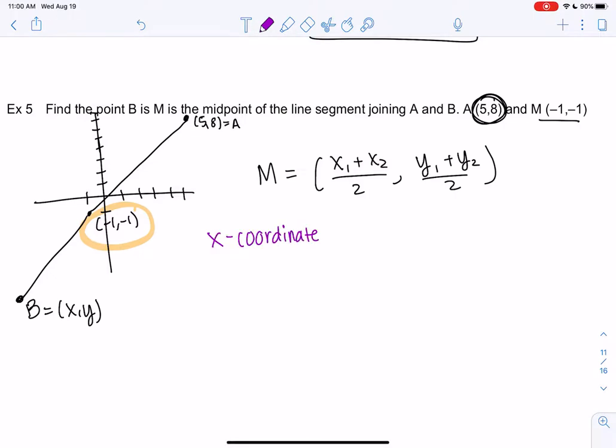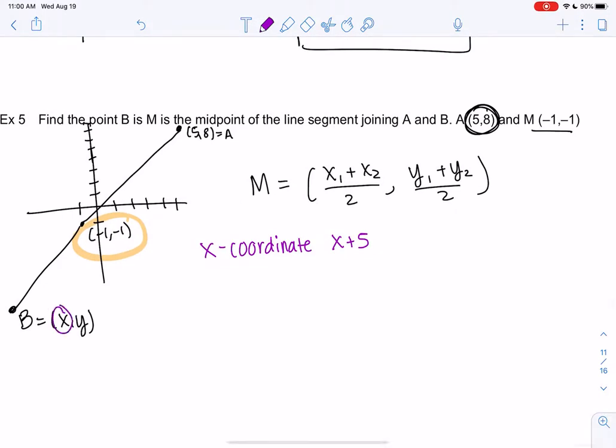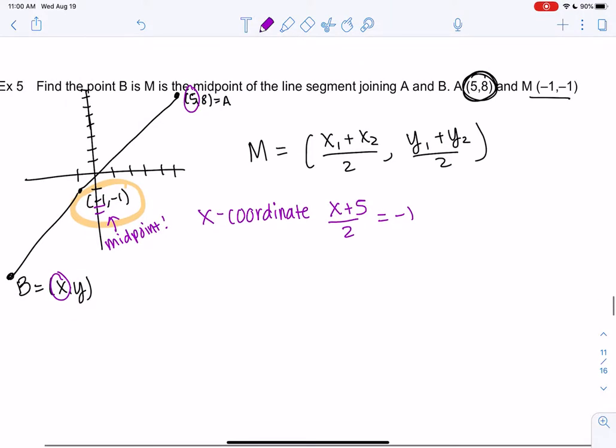So we know the midpoint is x1 plus x2, so we'll say x plus 5, x1 and x2, all over 2. We're going to average those out, and rather than saying that equals the midpoint, we know that equals negative 1. And so we'll go ahead and solve that. Send me a question if you're not quite sure how I'm plugging in. So times by 2. So x plus 5 is negative 2. So x is negative 7.